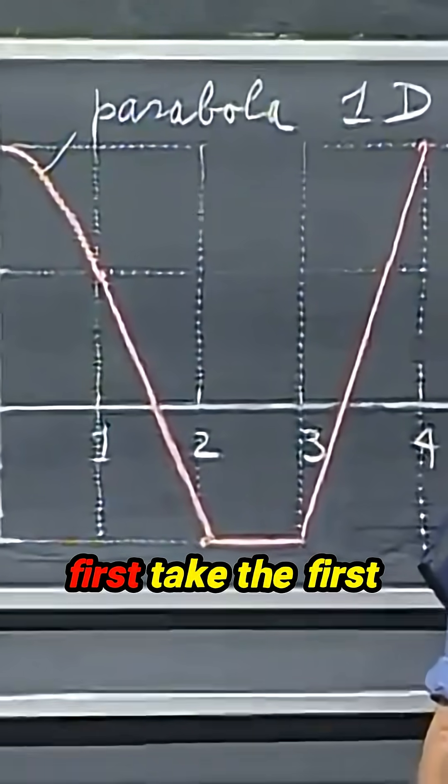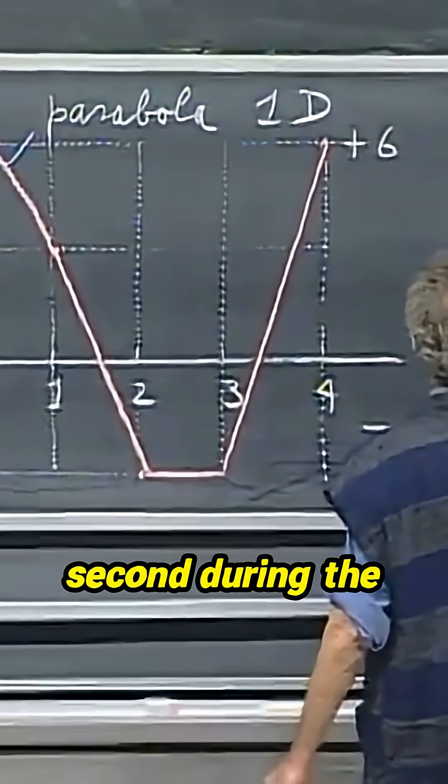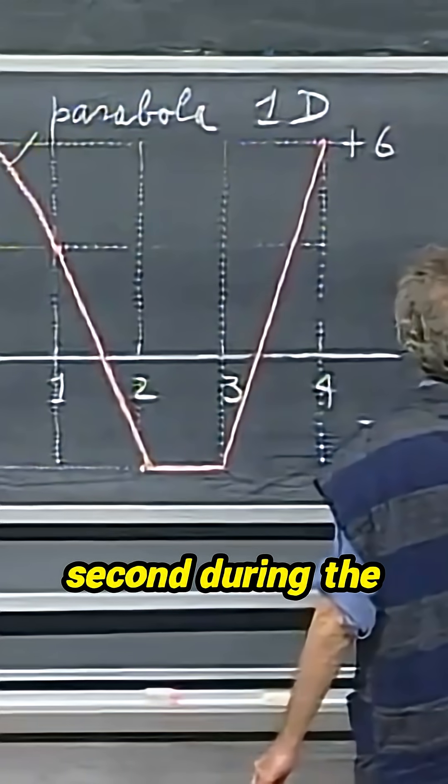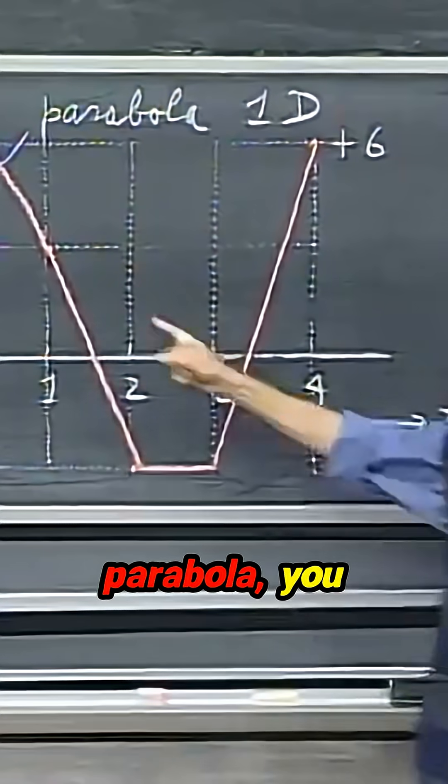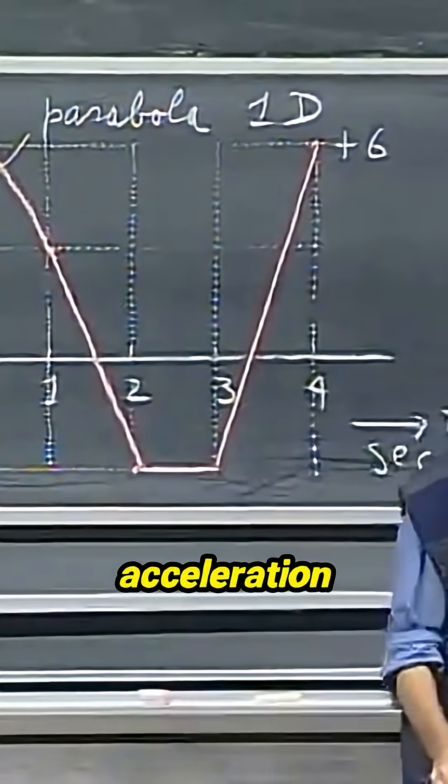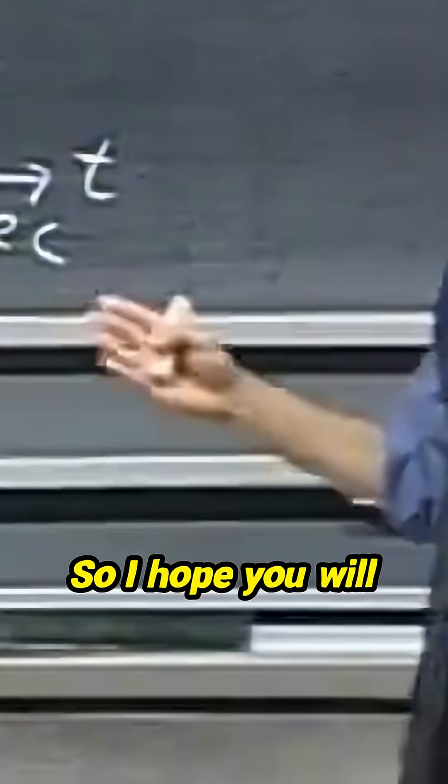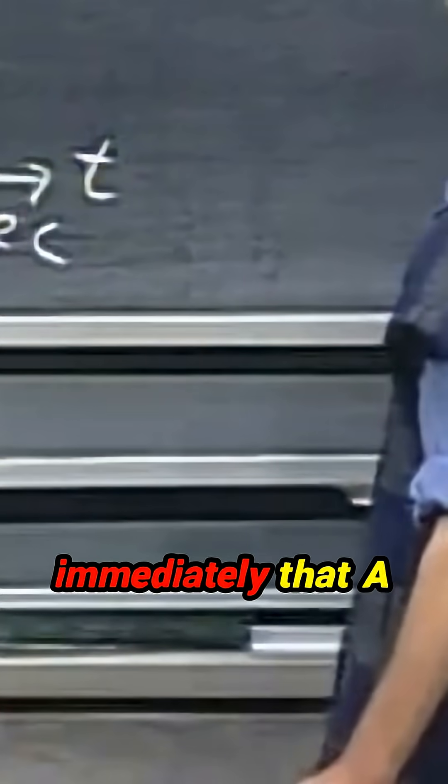Let's first take the first second. Since this is a parabola, you know that the acceleration is constant. So I hope you will conclude immediately that a must be a constant.